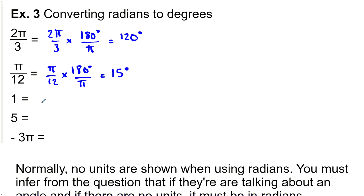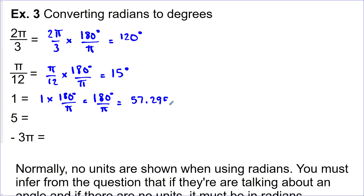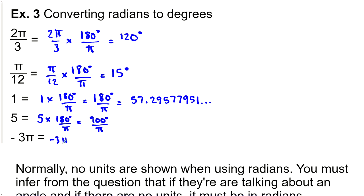For 1 radian: 1 times 180°/π is just 180/π, which as a decimal approximation is about 57.2958°. It's irrational. For 5 radians: 5 times 180/π gives 900°/π. And for negative 3π: negative 3π times 180°/π — the π's cancel — and we're left with negative 540 degrees. Notice that for radian measures there are no units written; you identify them as radians because there's no degree symbol.